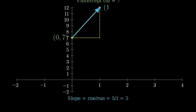Let's find a few more points to make our line more accurate. At x equals negative 1, y equals 2. At x equals 2, y equals 17.